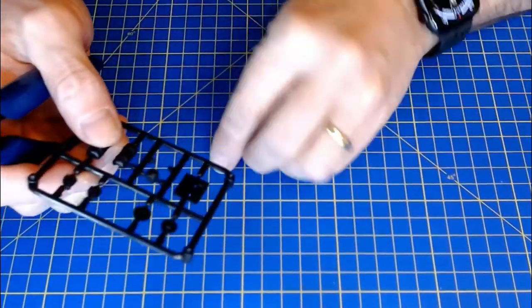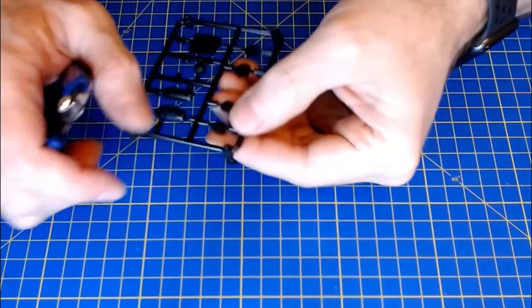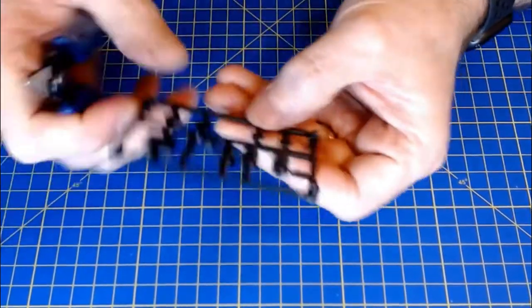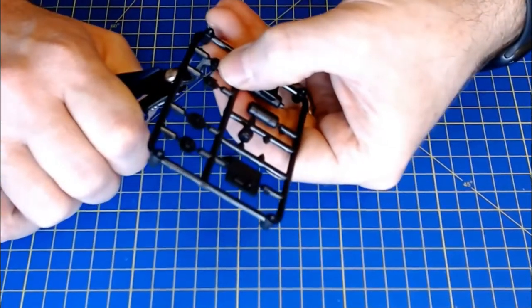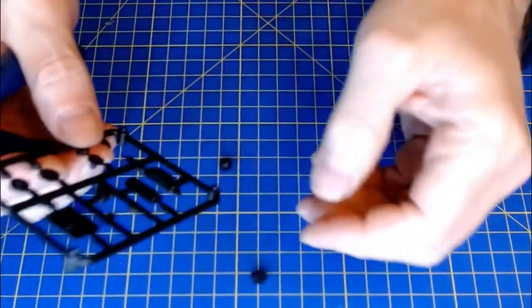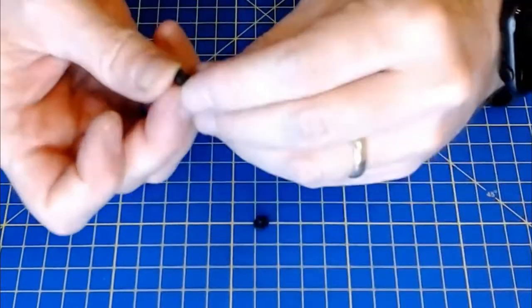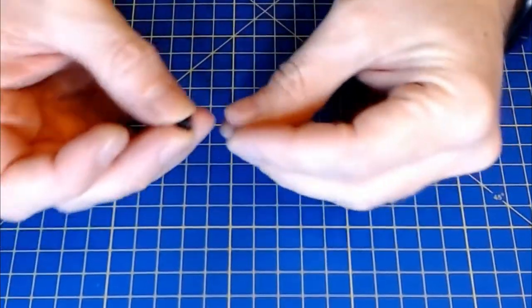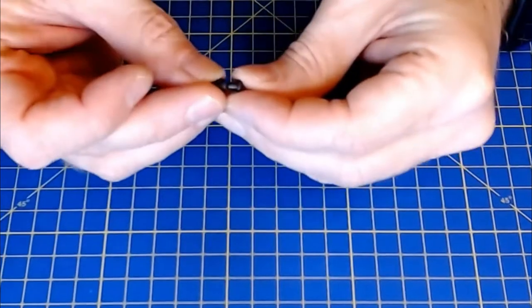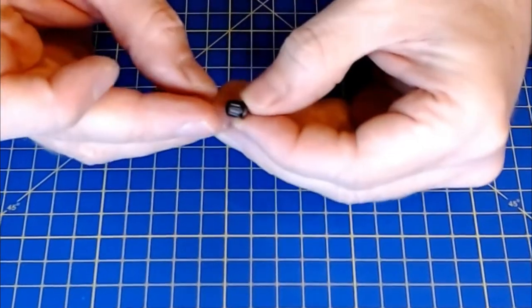And one part B, which is these. Make sure we've got a little flash. That's pretty good. And that's pretty good as well. And then we're just going to be gluing them together. Test fit them first, obviously. Glue them together.